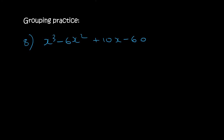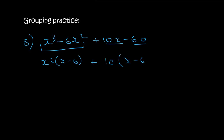Here's number 8. In the first two terms the common factor is x squared, leaving x minus 6. The common factor in the second two terms is 10, also leaving x minus 6. So we have x minus 6 in both — we take that out, and then we're simply left with x squared plus 10.